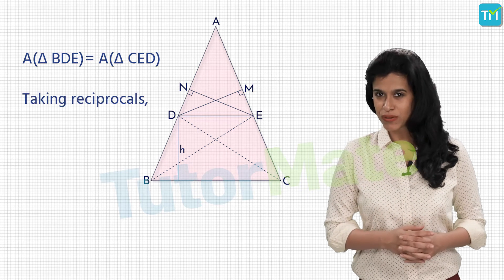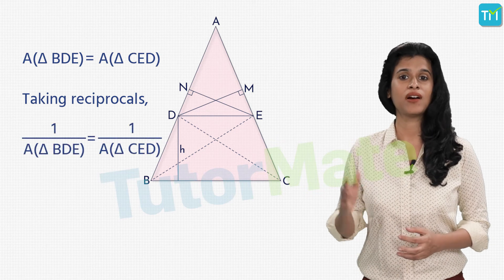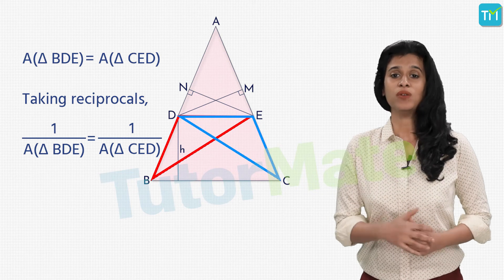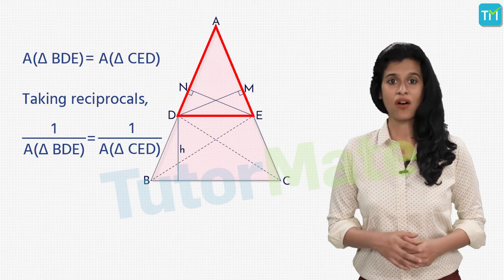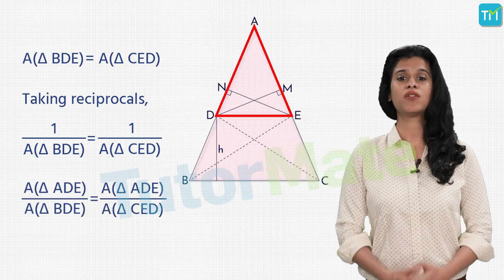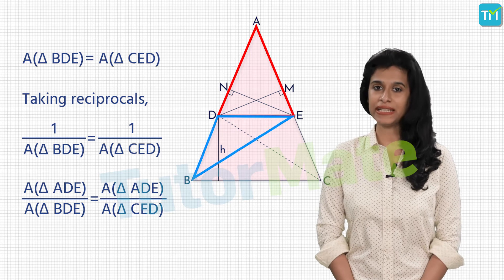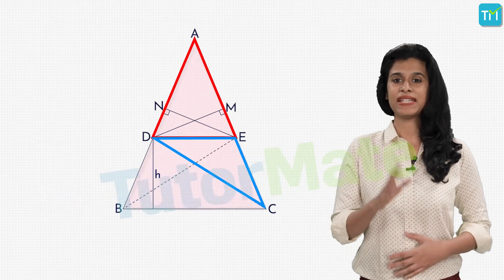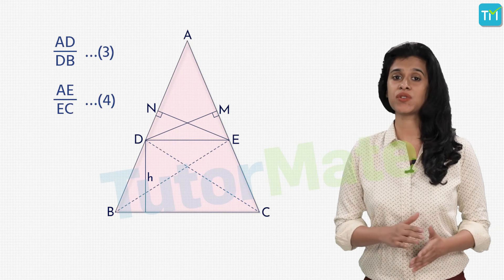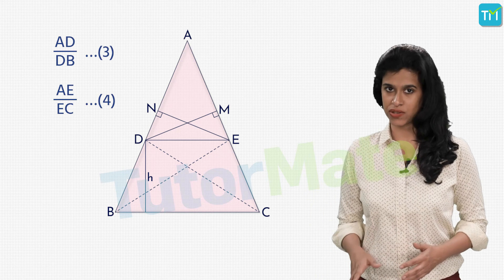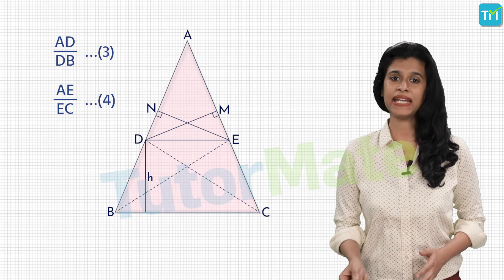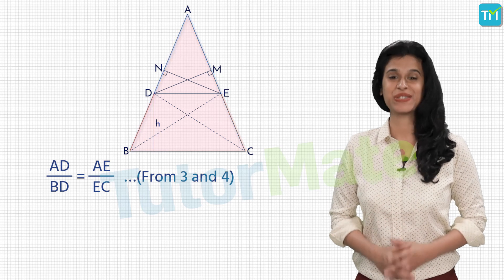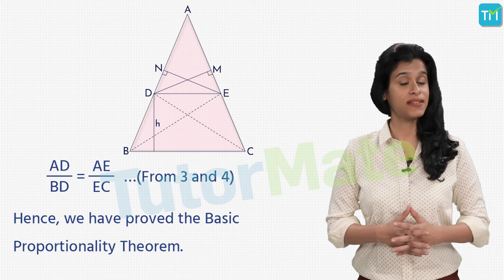Since area of triangle BDE equals area of triangle CED, we can take reciprocals on both sides. Then multiplying both sides by the area of triangle ADE, we get: area of triangle ADE upon area of triangle BDE equals area of triangle ADE upon area of triangle CED. By Statements 3 and 4, we already know these ratios, so substituting them we get AD upon BD is equal to AE upon EC. And that is exactly what we wanted to prove. So we have successfully proved the Basic Proportionality Theorem.